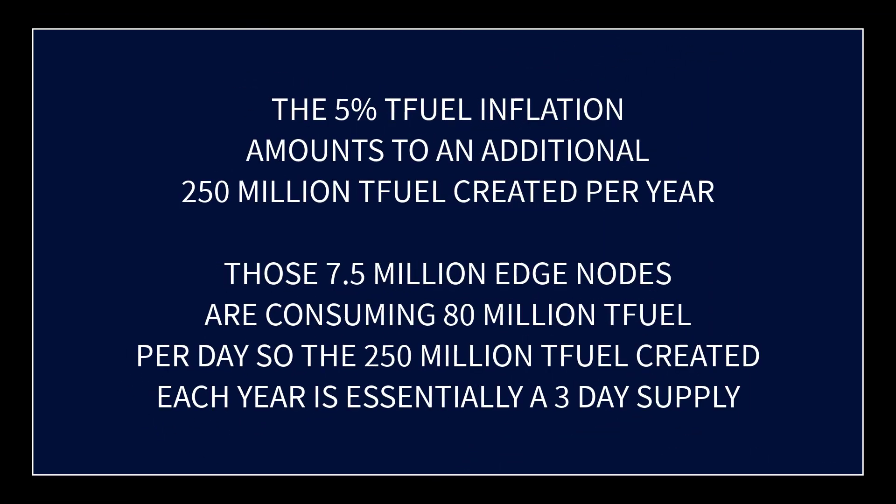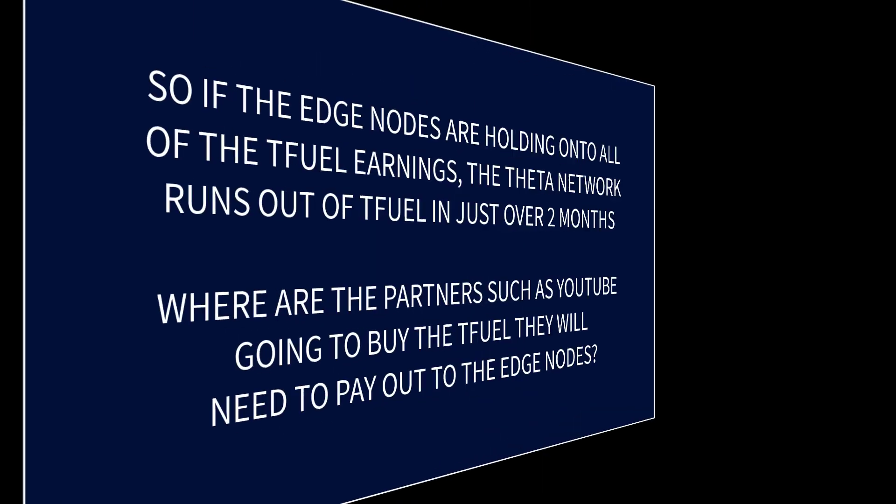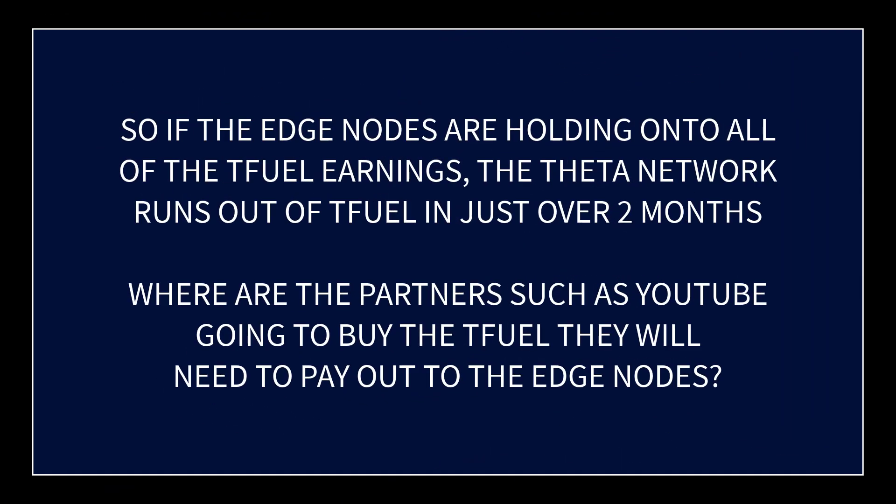The five percent T-Fuel inflation rate amounts to an additional 250 million T-Fuel created per year. Those 7.5 million edge nodes are consuming 80 million T-Fuel per day, so that 250 million created annually is essentially just a three-day supply. If edge nodes are holding on to their T-Fuel earnings, the Theta network runs out of T-Fuel in just over two months.